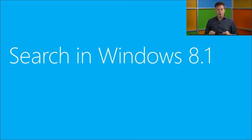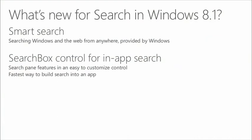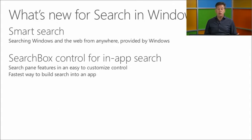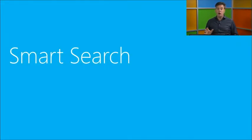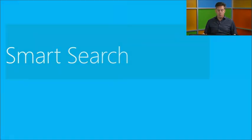In Windows 8.1, we have Smart Search, which is part of Windows and searches the web and anywhere on your system. We also have the new search box control — a new control for in-app search, giving you the same experience that Windows offers, inside your app.